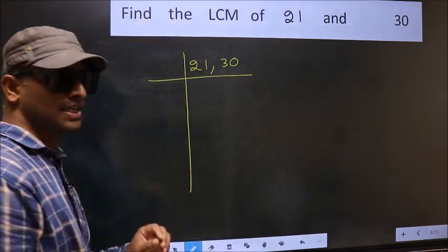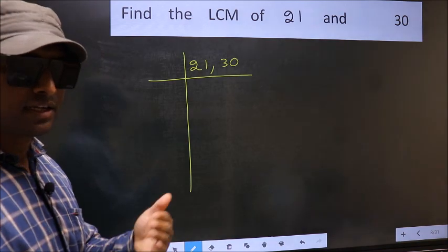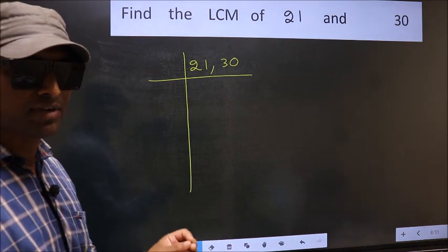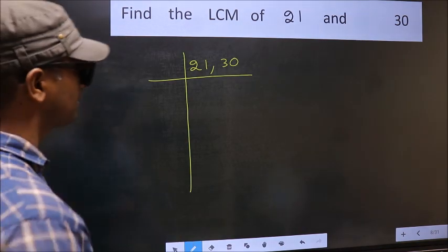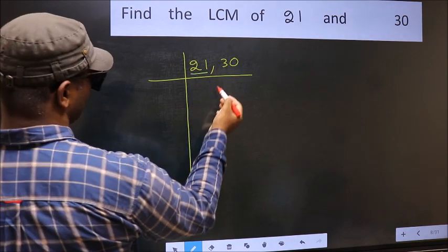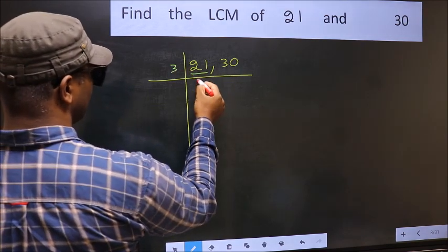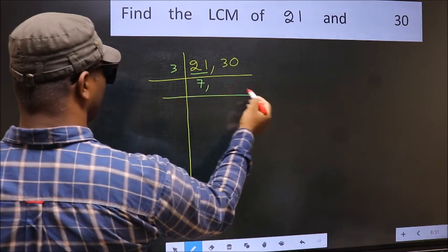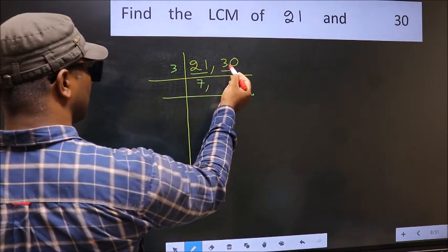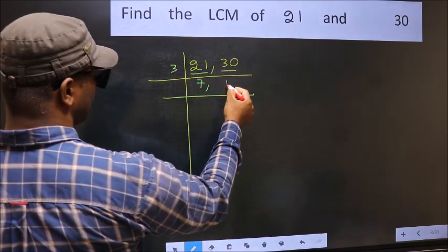This is your step 1. Now, you should focus on the first number, which is 21 here. 21 is 3 times 7 equals 21. The other number is 30. When do we get 30 in 3 table? 3 times 10 equals 30.